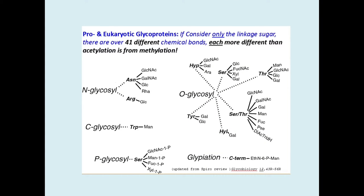Glycosylation can be categorized under different types: N-link, O-link, glypiation, C-link, and phosphoglycosylation. In N-link glycosylation, the glycan binds to the amino group of asparagine in the endoplasmic reticulum. In O-link, it is characterized by monosaccharide which binds to the hydroxyl group of serine and threonine in the ER, Golgi, cytosol, and nucleus.